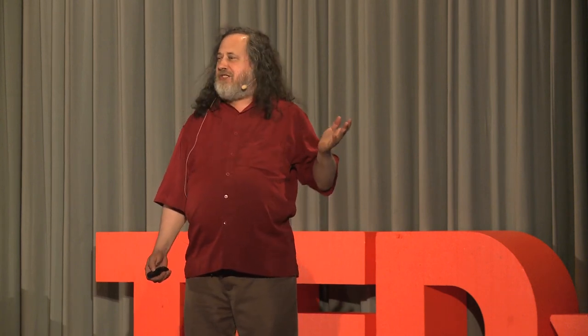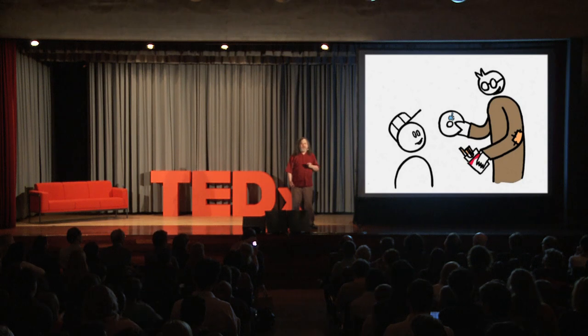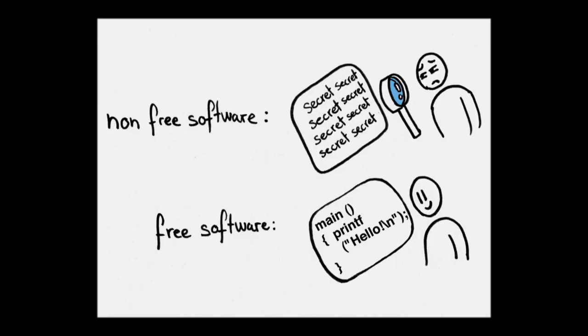Another obstacle is that lots of schools teach non-free software, which is basically like teaching kids to smoke tobacco — it's implanting dependence, the opposite of what schools should do. A school should prepare citizens to live in a strong, capable, independent, cooperating, and free society, which means teaching free software. Some kids want to become programmers; they're curious and want to know how programs work. The student studying free software can understand it, but the one studying a non-free program can't learn anything, because the knowledge in the non-free program is withheld from the students.